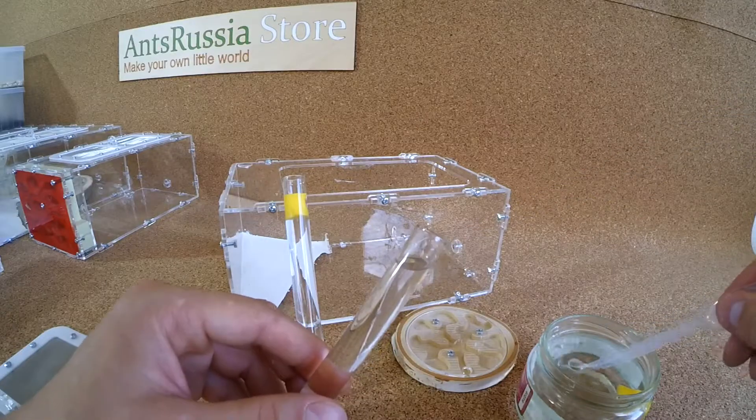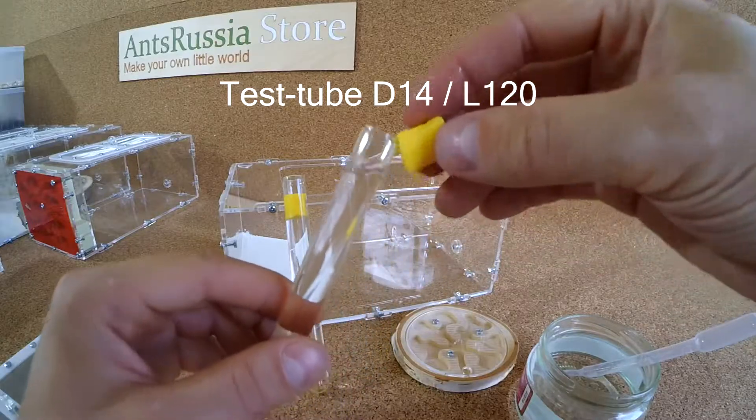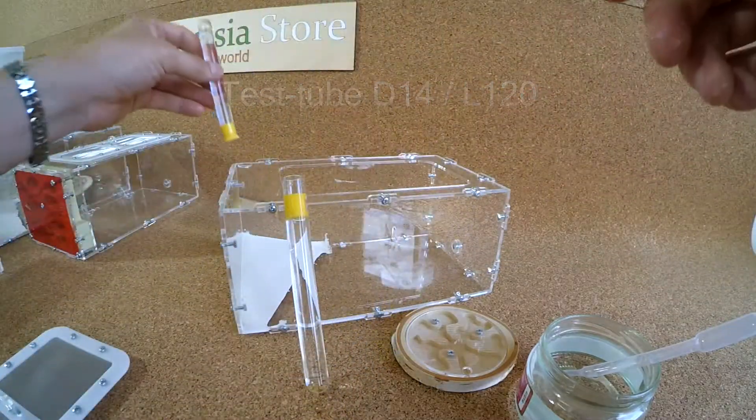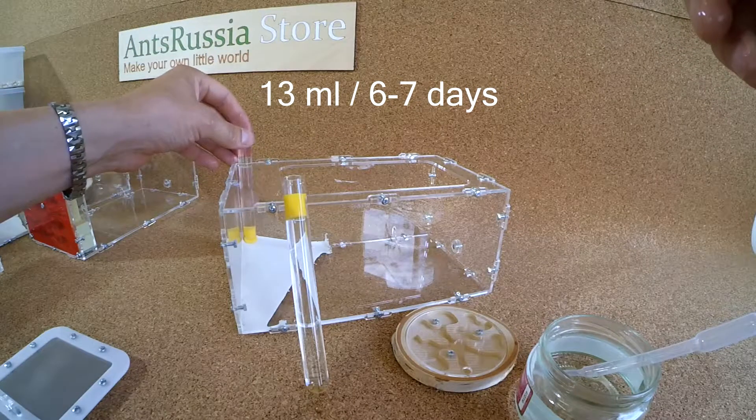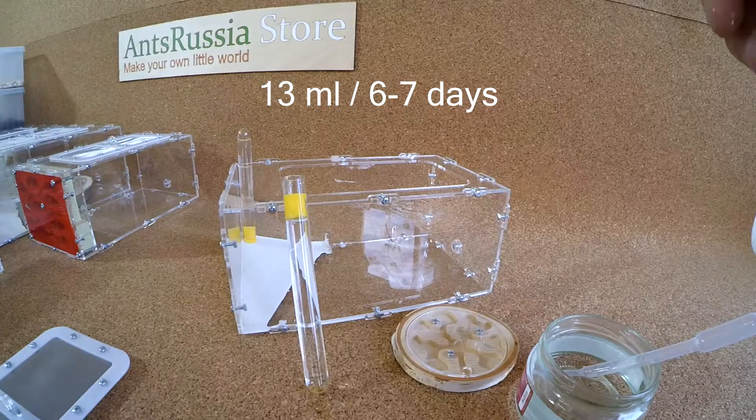For autonomic humidifier there is test tube with outside diameter 14 mm and length 120 mm. The 13 ml test tube volume allows to achieve an autonomic maintenance of humidity level within 6-7 days.